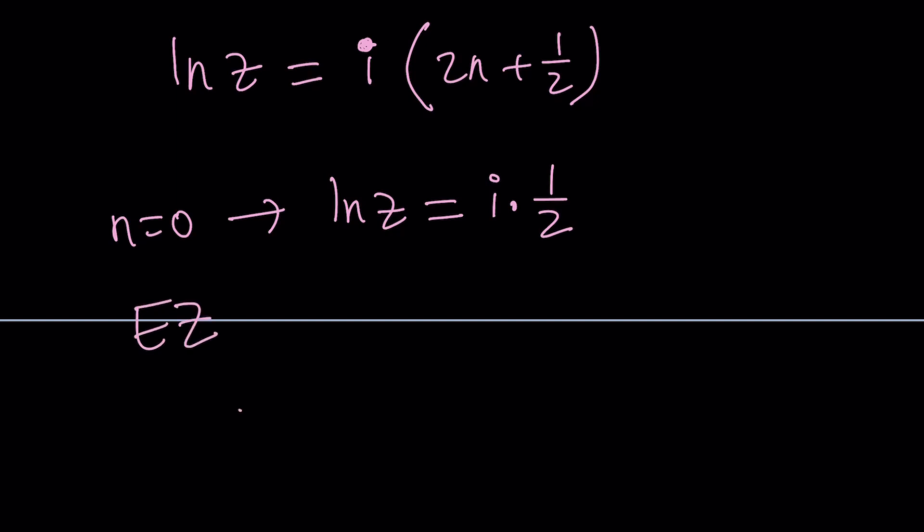You can write this as z equals e to the ln z. And since ln z is i times 1 half, this is just going to be e to the power i times 1 half. What does this remind you? This should remind you Euler's formula, hopefully.